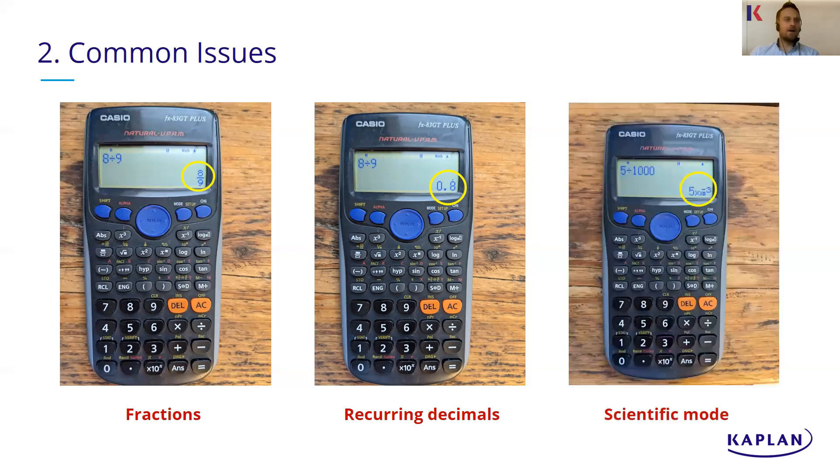And the third issue that often happens is that it does this scientific mode. So rather than showing this as a decimal, it shows you something like five times 10 to the power of minus three, which again isn't all that helpful. So these settings I'm about to show you will fix those and make sure that everything is nice and just a normal decimal that you can then use in your answers.